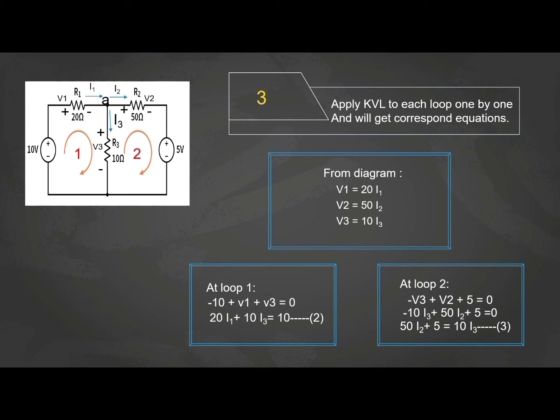Meanwhile, at loop two, negative V3 plus V2 plus 5 equal to zero. Substitute the value of V3 and V2. So, we get negative 10I3 plus 50I2 plus 5 equal to zero. Rearrange back the equation, so we have our third equation. 50I2 plus 5 equal to 10I3.